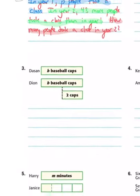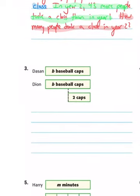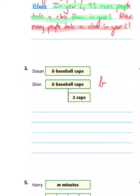Let's do number three. There's someone named Dasan with B baseball caps. If you take B baseball caps and this represents that you're taking two caps away — that represents subtraction — so our expression would be B minus two, because we took two away. We need a sentence to show something about Dasan and B baseball caps.